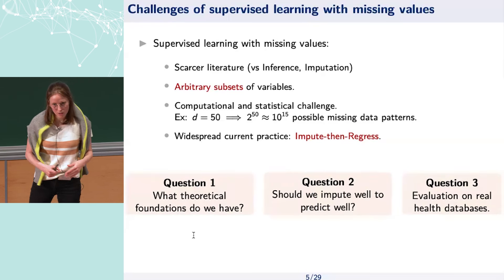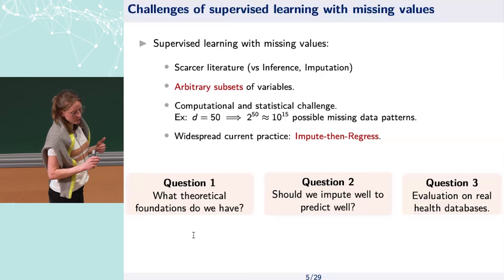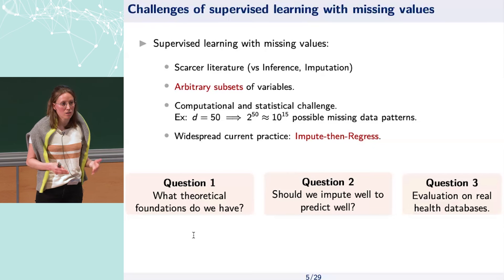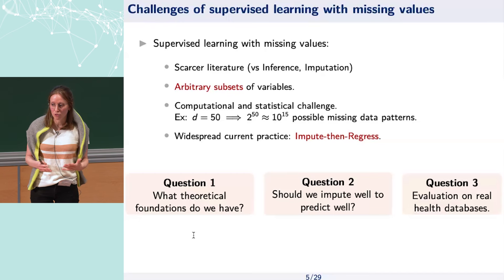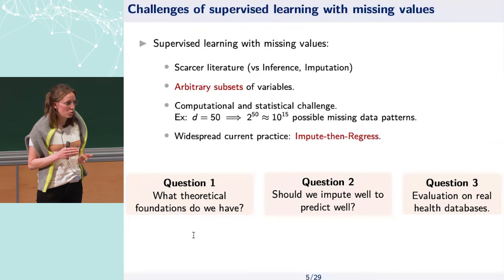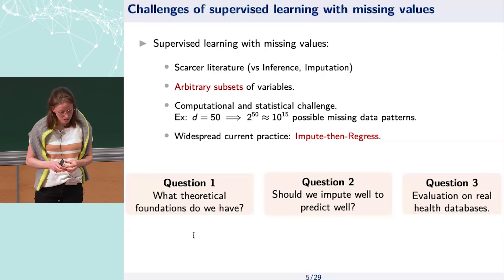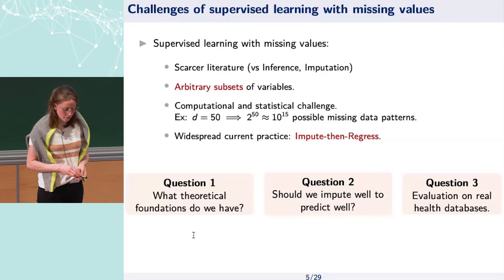Here are the questions I want to ask and answer. First, we will see whether we have theoretical foundations for this widespread practice of first imputing and then doing your regression. Second, we will wonder whether we need to impute well to predict well — the answer is not clear and obvious. And finally, if we have time, we'll look at some real clinical databases and see how different approaches compare.